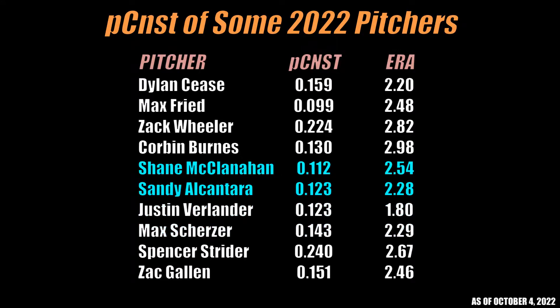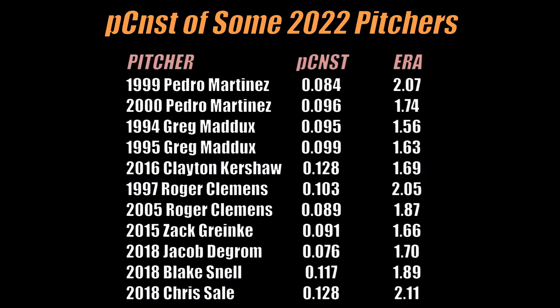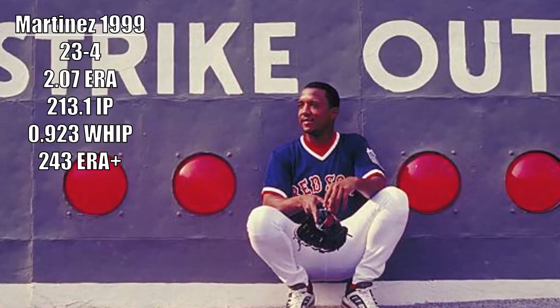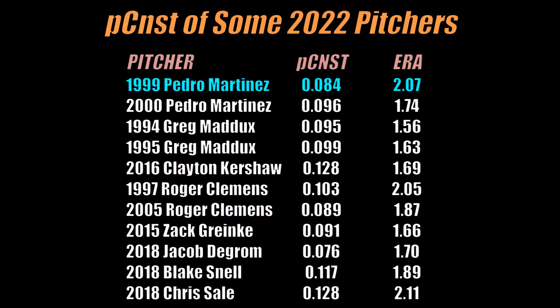Shout out to McClanahan and Alcantara on a couple of insane years as well. Finally, just for fun, here's a look at the consistency stat of pitchers from a few great seasons in the past 30 years. Check out 1999 Pedro Martinez — no surprise there, he has an argument for the greatest pitching season of all time that year. A more recently impressive season is 2018 Jacob deGrom, with the best pitching consistency out of any of the seasons shown here.